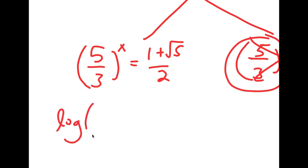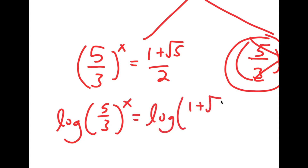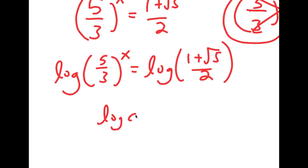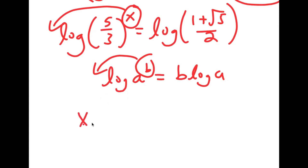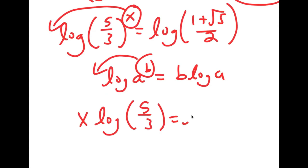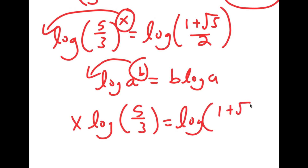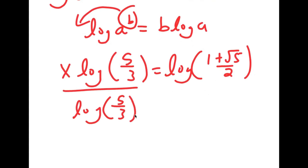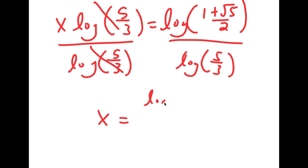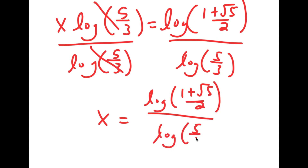For 5 over 3 to the power of x equal to 1 plus the square root of 5 over 2, I'm going to take the log on both sides. So I have log of 5 over 3 to the power of x equals log of 1 plus the square root of 5 over 2. Using the property log a to the power of b equals b times log a, I can move x to the front: x times log 5 over 3 equals log of 1 plus the square root of 5 over 2. Dividing both sides by log 5 over 3, I get x equals log of 1 plus the square root of 5 over 2, all over log 5 over 3.